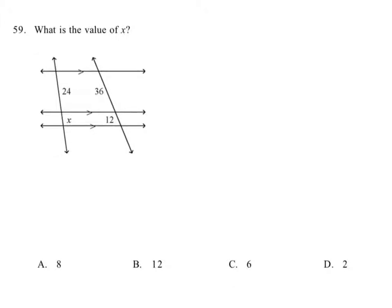What we need to do here is think about the side splitter theorem corollary, which says that if you have several parallel lines and transversals cutting through them, then you're going to get proportional segments within each particular transversal. So how does that help us here?